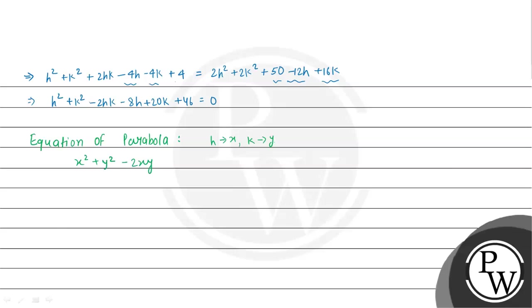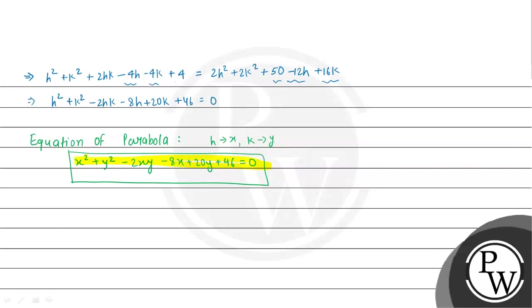So the final equation of the parabola is: x squared plus y squared minus 2xy minus 8x plus 20y plus 46 equal to 0. This is the final answer. I hope you understood the solution — best of luck, thank you.